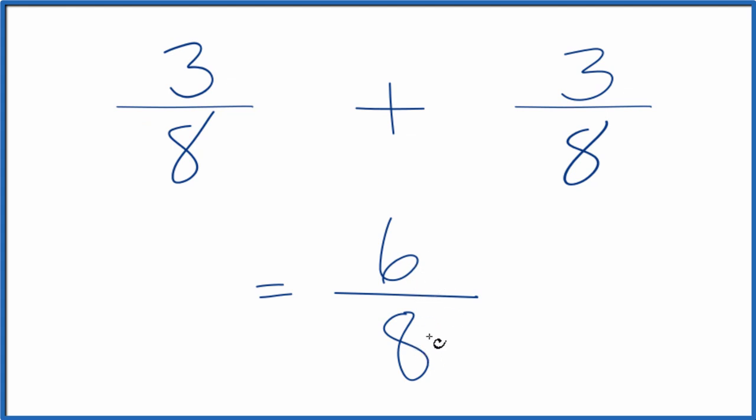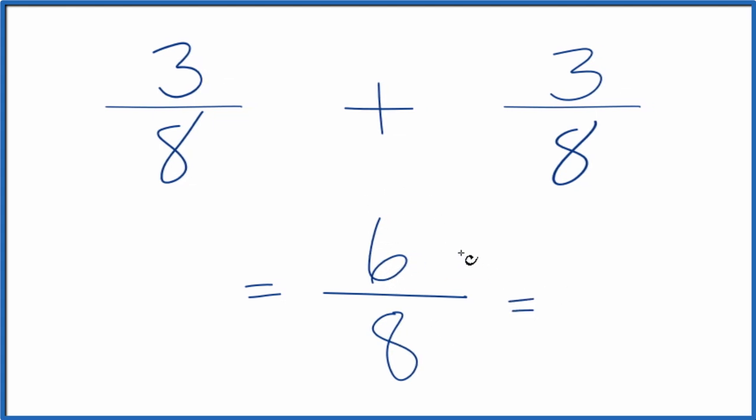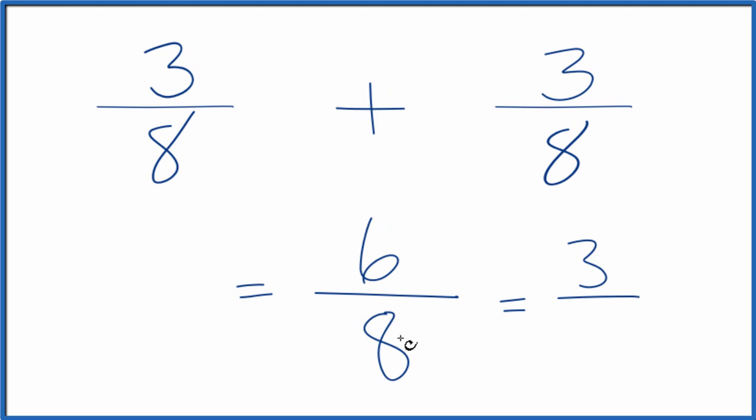6 8ths could be simplified further, though. Both of these are even numbers. So if we divide 6 by 2, that would give us 3. If we divide 8 by 2, we get 4.